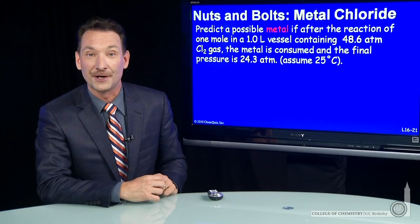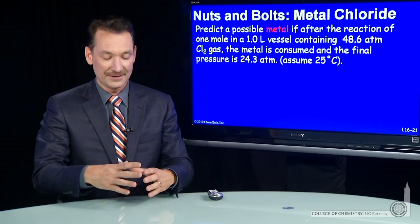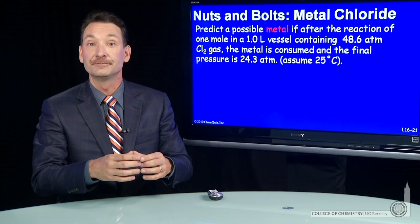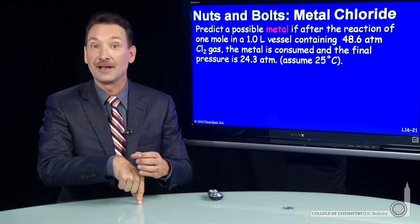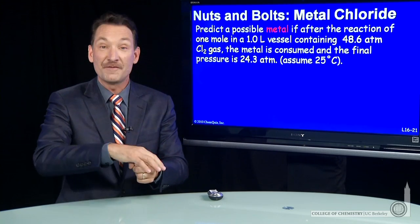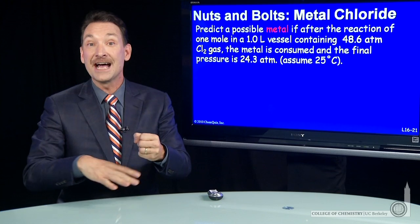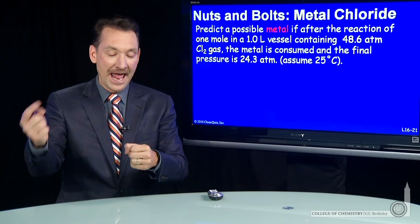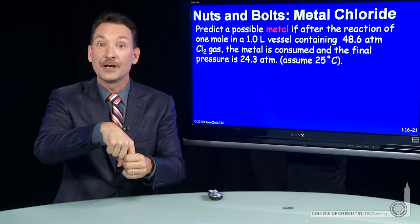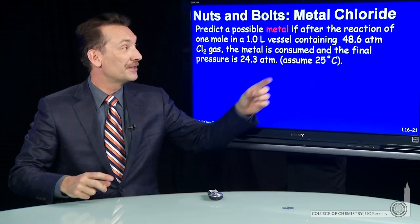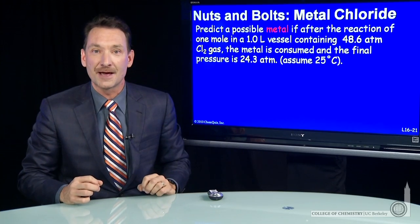Let's do some calculations with the ideal gas law. I'm going to take a flask, one liter, at room temperature, put a mole of a metal in it, then evacuate the flask so there's no gas particles, and add in chlorine gas, Cl2 gas, until the pressure comes up to 48.6 atmospheres.